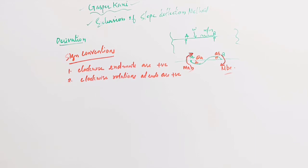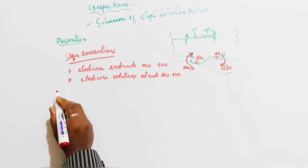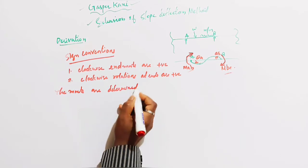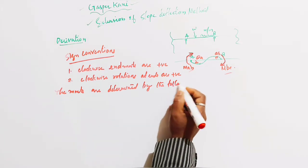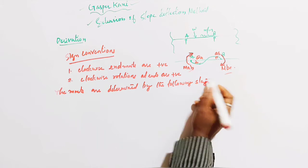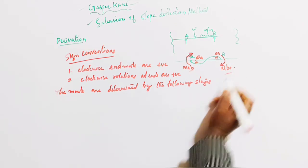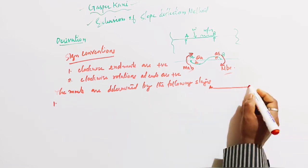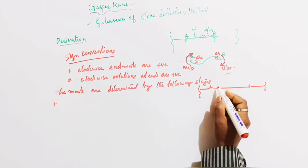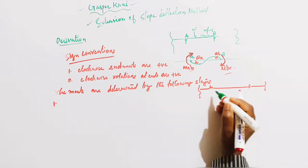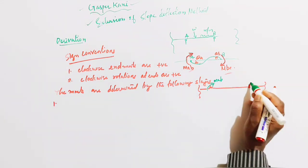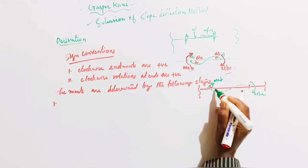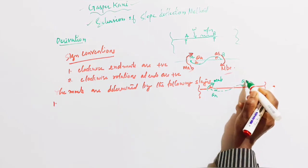The moments MAB and MBA are determined by the following steps. Consider beam AB of a continuous structure. MAB and MBA are the end moments, and theta A and theta B are the rotations at ends A and B respectively.